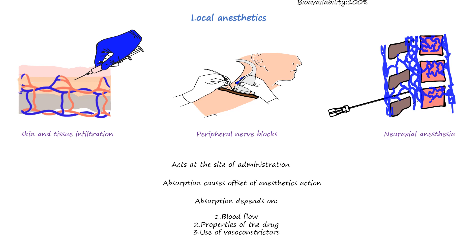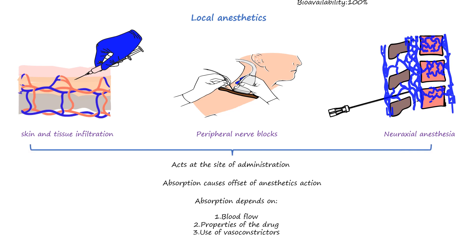In peripheral nerve blocks, local anesthetic is injected near the target nerve or nerves. The same factors determine the absorption of local anesthetics, which is responsible for the offset of its action. Similarly, epidural and spinal anesthesia result from the interaction of local anesthetics with nerve structures, primarily those located within the subarachnoid space. As the medication is absorbed into the bloodstream and cleared from the spinal fluid or epidural fat, sensory and motor functions return.